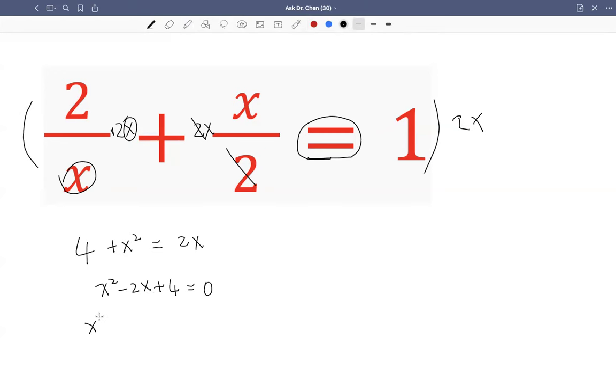Now I want to solve this by completing the square, which means I want to move this 4 to the other side. It becomes negative. So positive 4 moved to the right-hand side becomes negative 4.